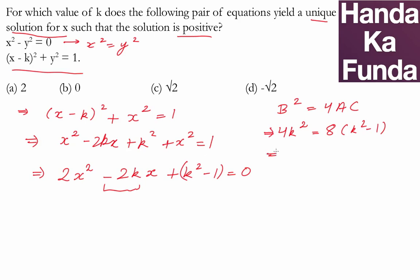So, what does this give me? This gives me 4k² and 8k² - 8. So, 8k² - 4k² will be 4k² - 8 = 0 or k² is equal to 2 or k is equal to plus minus √2.